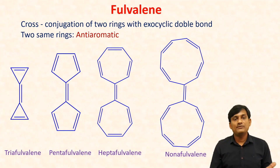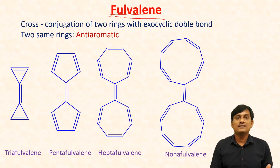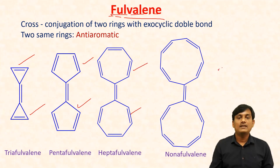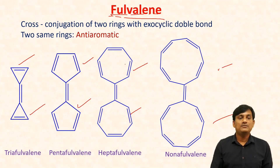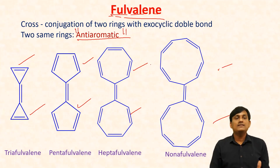Fulvolene is different from fulvene. Fulvolene means there is cross-conjugation between two rings with an odd number of carbons, whereas fulvene is one ring with a methylene group. Fulvolene means two rings which are in conjugation. For example: a three-membered ring with a three-membered ring, five-membered with five-membered, seven-membered with seven-membered, nine-membered with nine-membered. If the two rings are the same — three-three, five-five, seven-seven, nine-nine — the behavior is anti-aromatic.